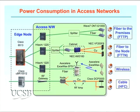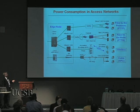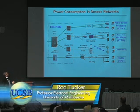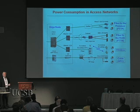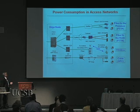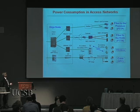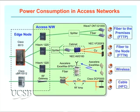Different access technologies consume different amounts of power. There are four typical types: fiber-to-the-premises with fiber all the way to the home; fiber-to-the-node with fiber to a cabinet near the home, active electronics in the cabinet, and copper pairs to the home; wireless technology; and HFC or cable television type technologies, widely used in the US with fiber to a node and coaxial cable to the home.